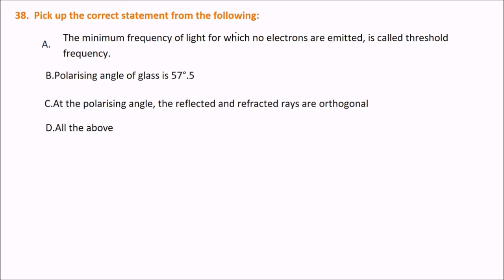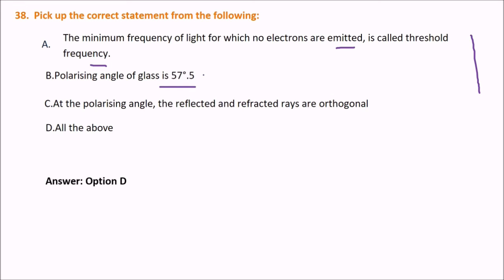Pick up the correct statement about polarizing angle. The answer is all of the above: the minimum frequency of light for which no electrons are emitted is called the threshold frequency; the polarizing angle of glass is 57.5 degrees; and at the polarizing angle the reflected and refracted rays are orthogonal, i.e., at 90 degrees.